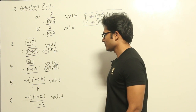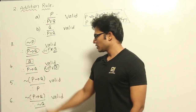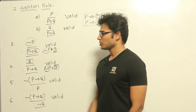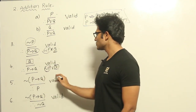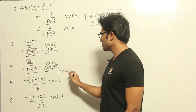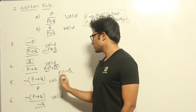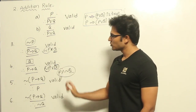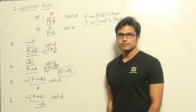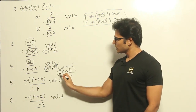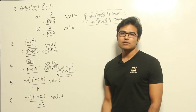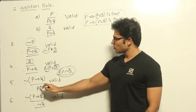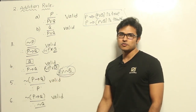Coming to the next one: if ¬(P→Q) is true, we derive P. As you know, P→Q is ¬P∨Q. If we negate it, we get P∧¬Q, so ¬(P→Q) means P∧¬Q is true. When is P∧¬Q true? Only when both P and ¬Q are true. Therefore, saying P is true is valid — unless P is true, this entire conjunction cannot be true.